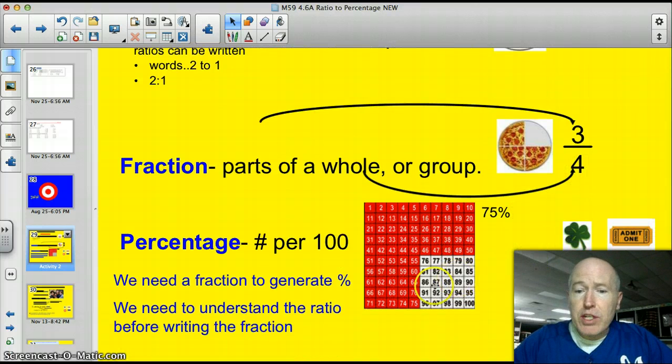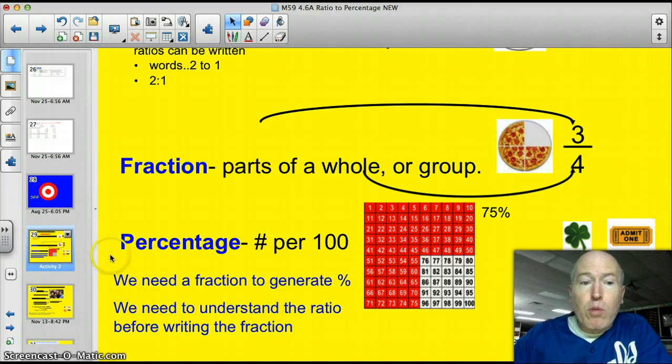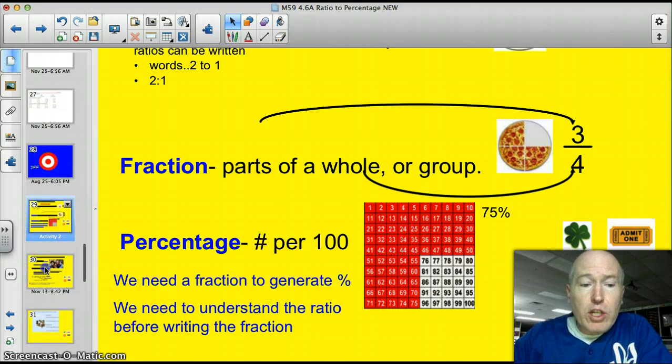And you have to understand percentages. Percentages then are that number per 100. And you can see I've numbered one to 100 here, and I've colored in the first 75 in red. So you can see completely that the red is the 75% of the 100. It's like a fraction, 75 out of 100, but it's always out of 100. So tonight, to accomplish our target, we're going to need to get to a fraction to generate a percent. And we need to understand the ratio a little bit more before doing that.